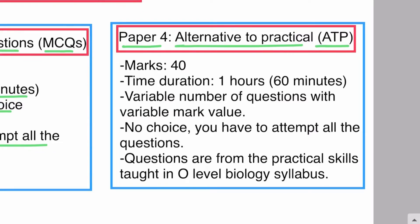Paper 3 is the practical paper or practical test, in which you go into the labs and perform the practical. But in Paper 4, which is Alternative to Practical, you don't have to perform any practical. You don't need to go in the lab; simply you appear for a paper which tests your practical skills.